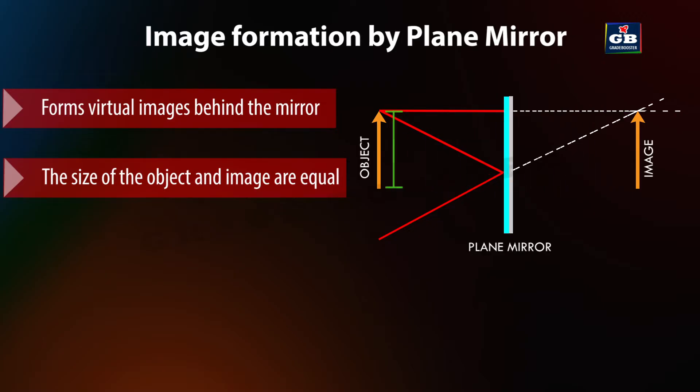Size and magnification: the size of the image in a plane mirror is the same as the size of the object. There is no magnification, meaning that objects in a plane mirror appear to be the same size as they are in reality.